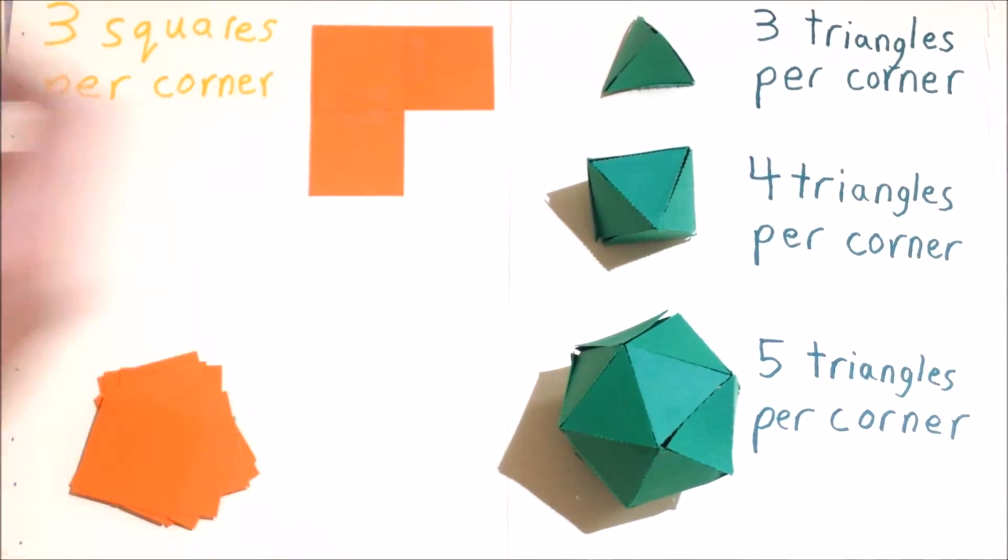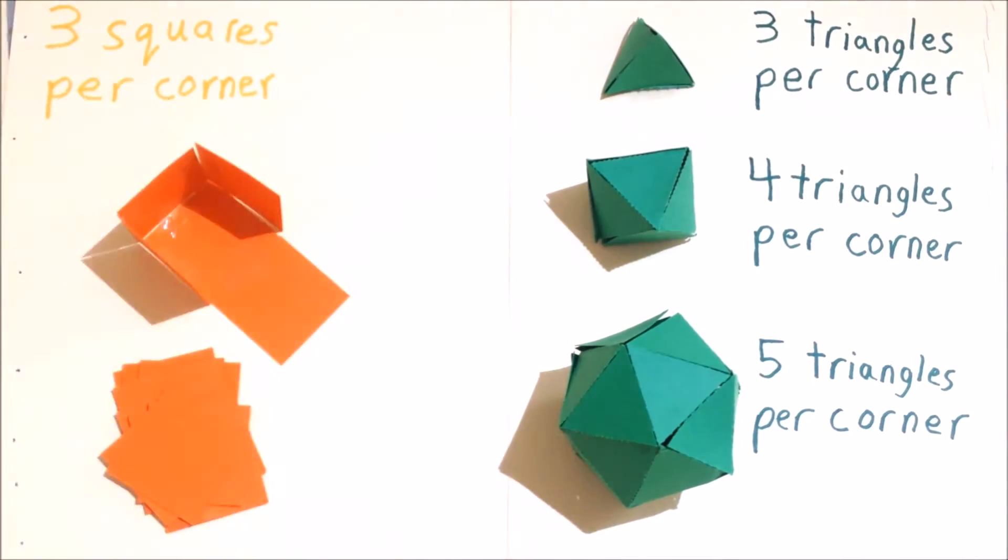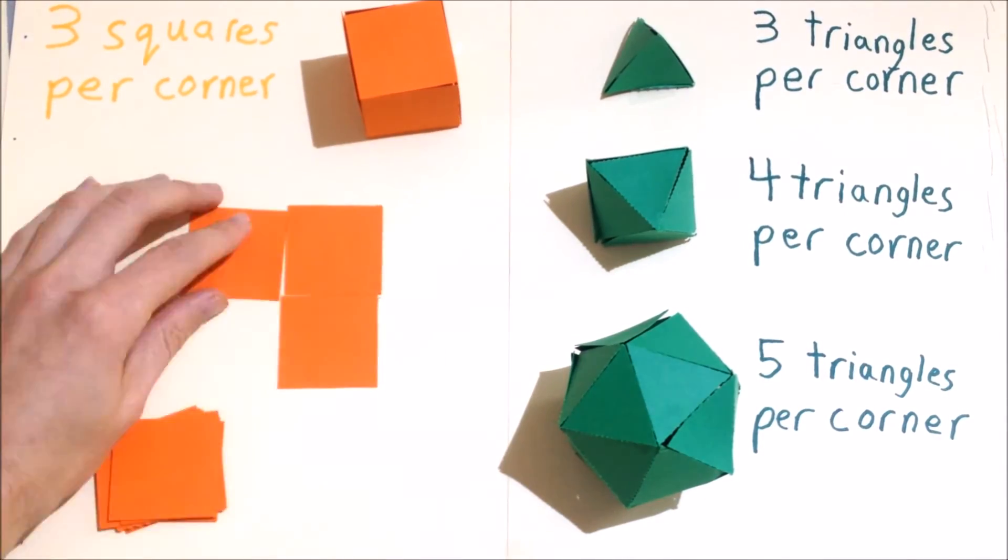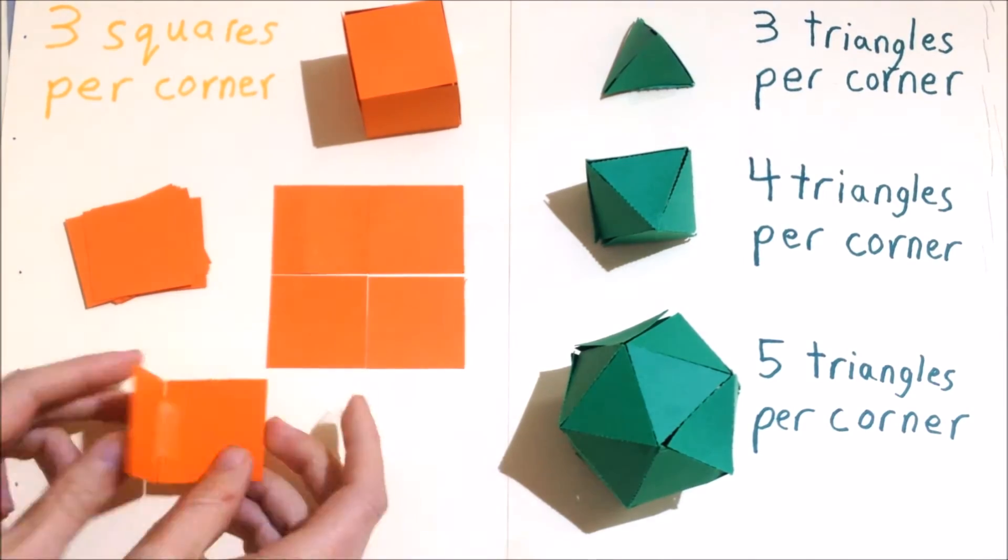If you try with squares, three squares at each corner makes for a nice cube. Four squares at each corner makes a bathroom floor, and two squares just doesn't work.